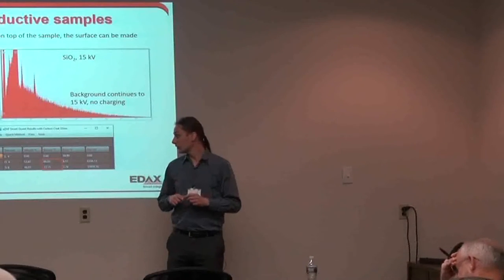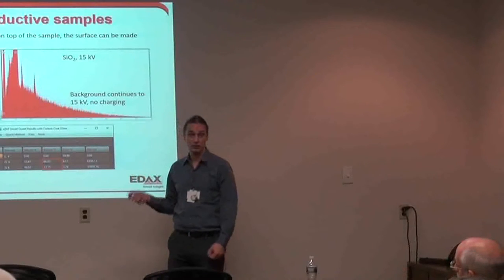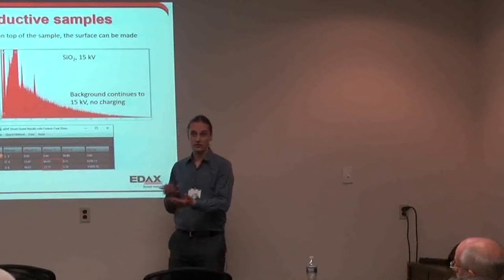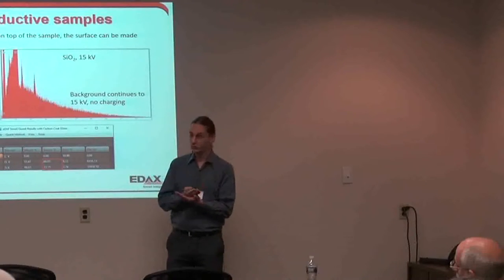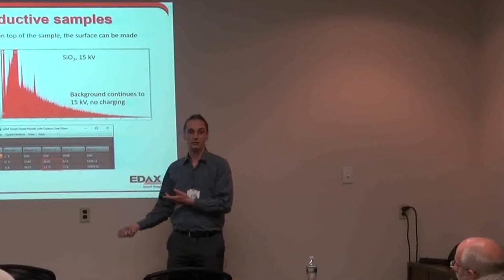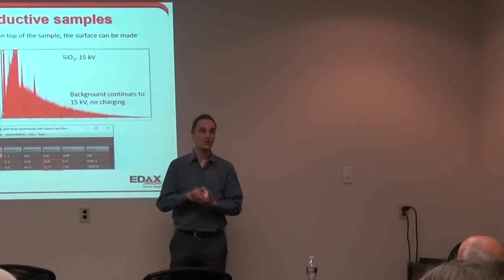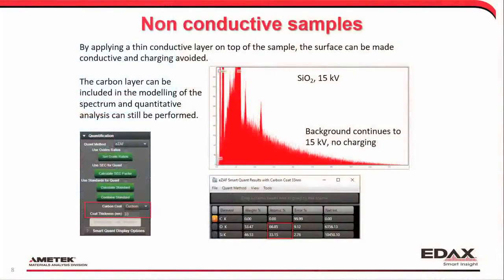What I suggest: there's an option in the software to calculate the carbon coat thickness. Take a clean sample like a silicon wafer and your unknown, put them into the coater, coat them for the same amount of time, then take the silicon sample, look at the spectrum, and based on the carbon peak in that spectrum we can calculate the thickness of the carbon layer. Enter that coating thickness into the software, and now we can analyze our unknown sample containing carbon and still get decent results.